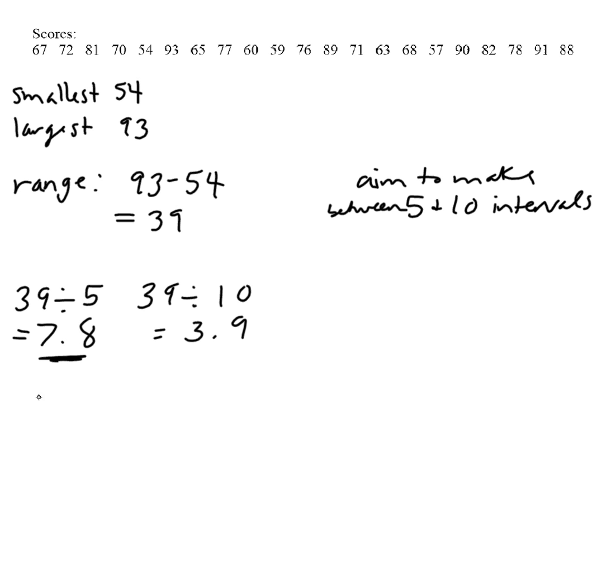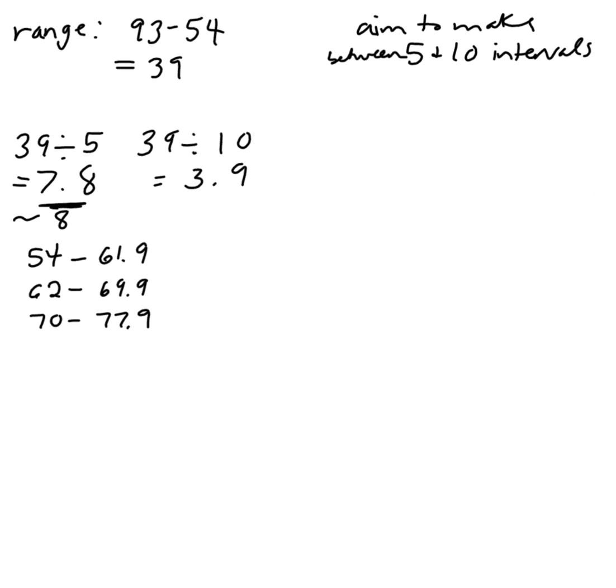So what I do is I start with the smallest of 54 and I go about 8. So 54 to, if I added 8 to that, I get 62. But I'm going to go to 61.9 because you don't want to repeat the same number twice. Then my next one will go 62 to 69.9. Then my next one will be 72 to 77.9. So what I'm doing is I'm using a range of approximately 8 and I'm splitting my numbers up into those intervals. I'm going to go from 78 to 85.9, and then I'll go 86 to 93.9.